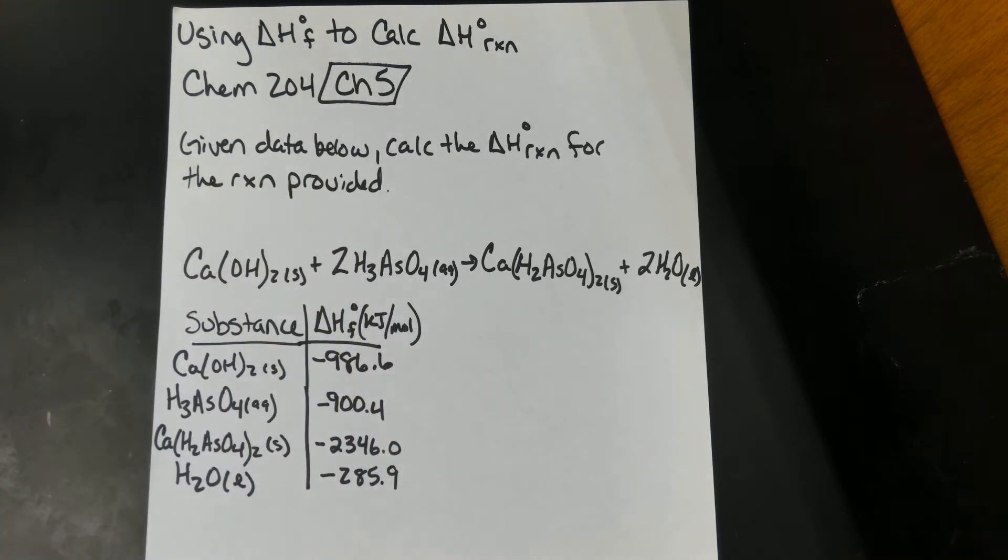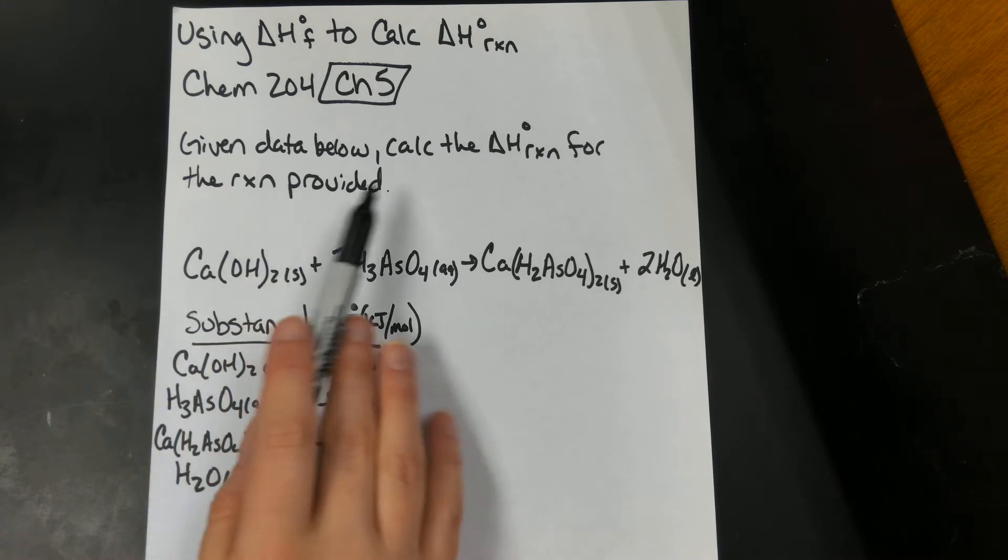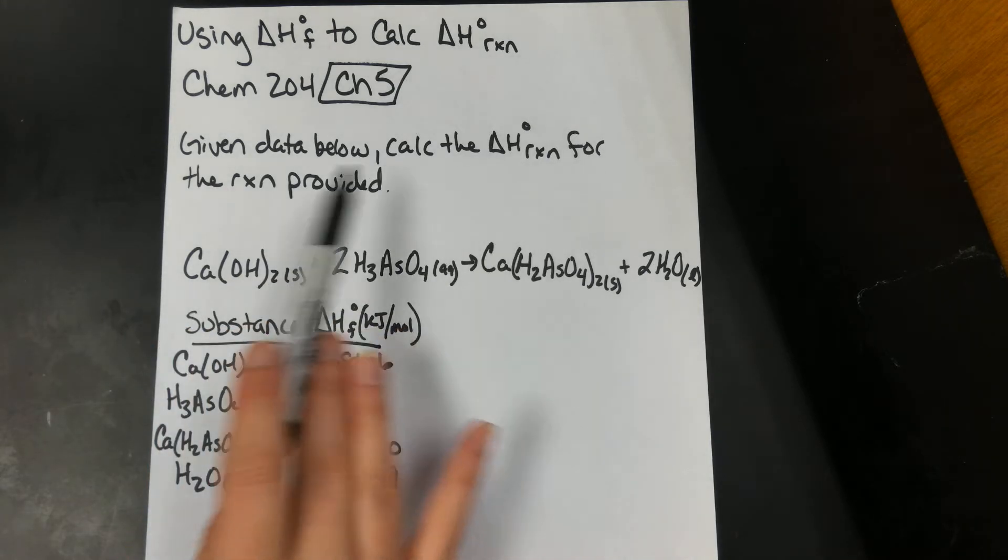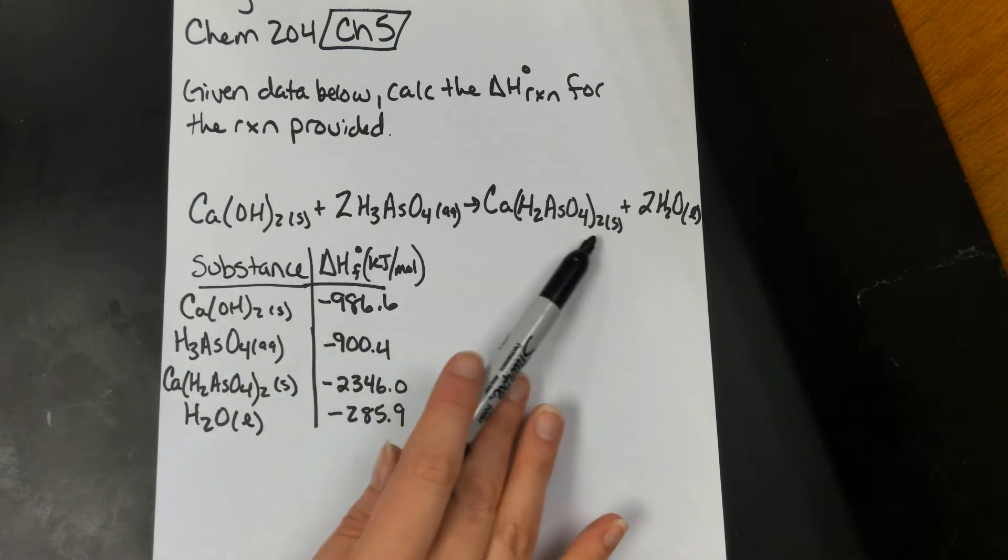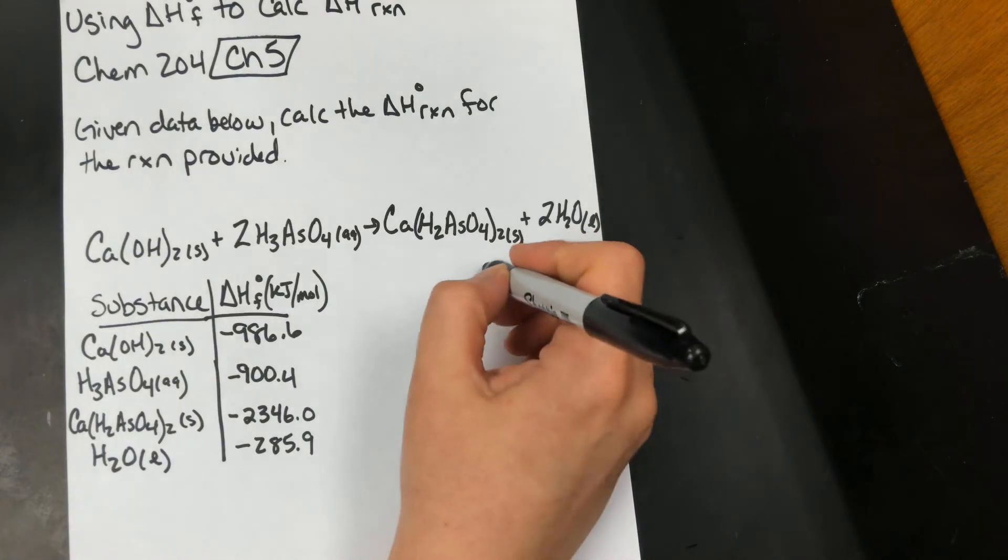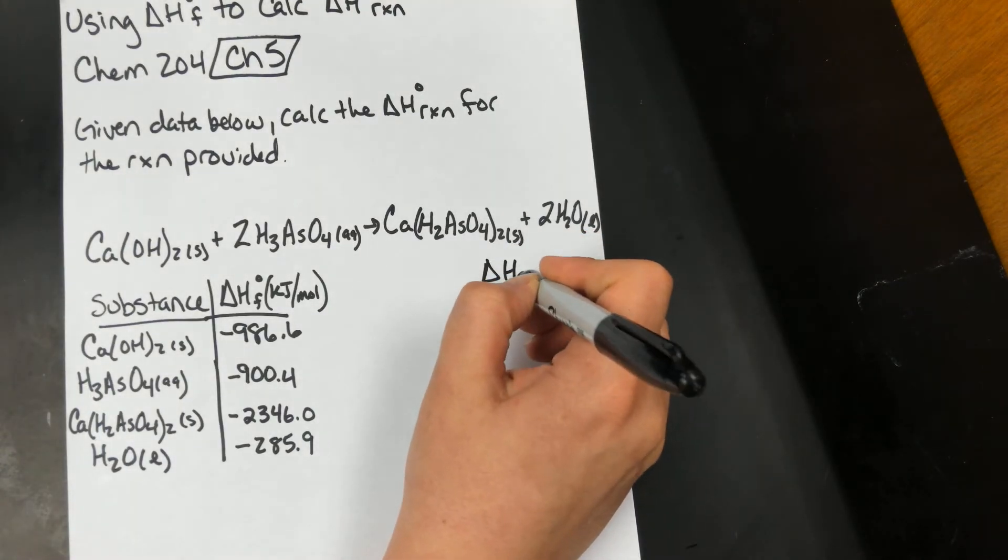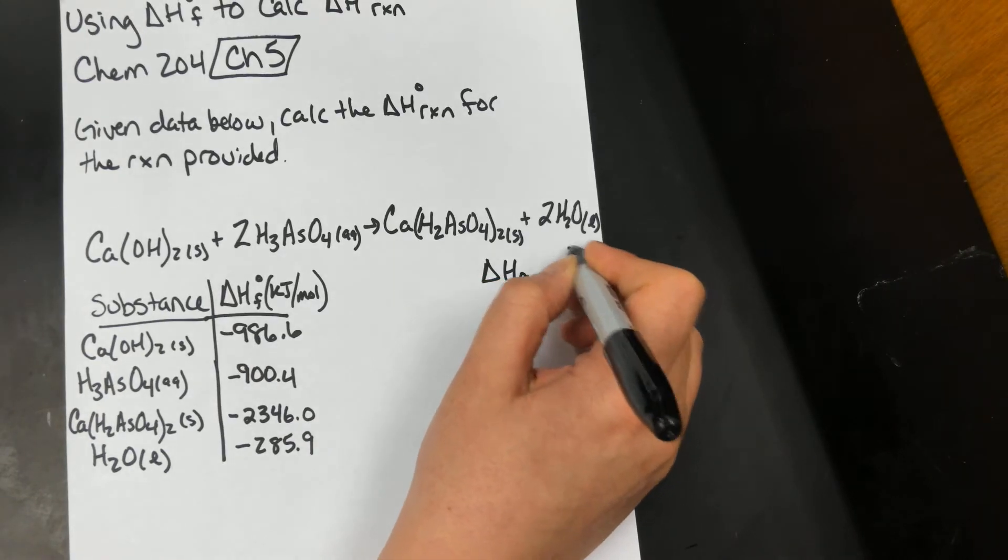This is for Ken 204, Gen Chem 1's Chapter 5. A typical problem you're going to see is, given the data below, calculate the ΔH reaction for the reaction provided. So they give you a reaction and then they say the ΔH reaction equals what?